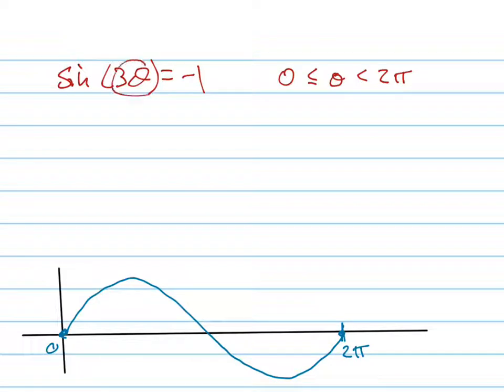But when I put a 3 in front of the angle like there, what did I just change? Remember how the period equals 2π over b?